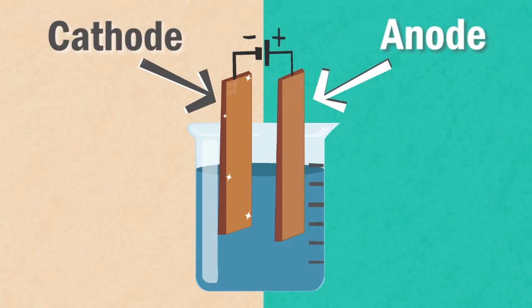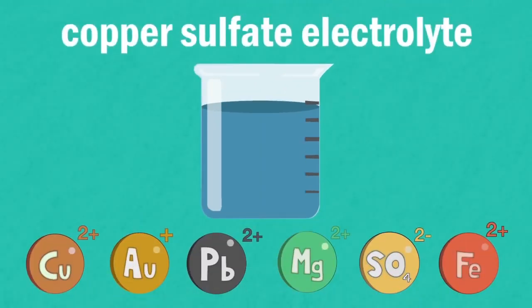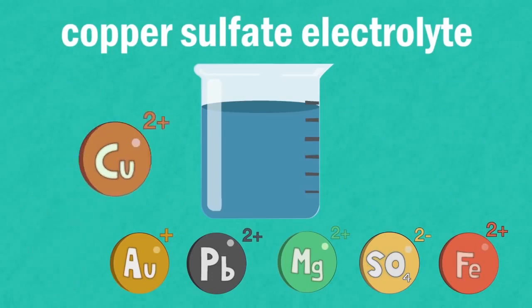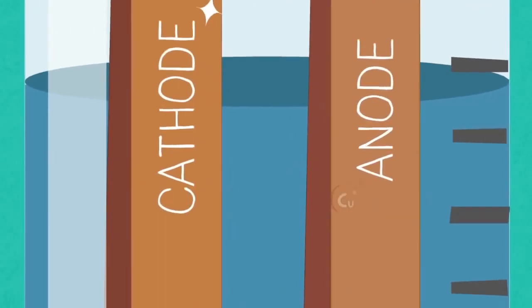What ions do you think are present in the copper sulfate electrolyte? The answer is that copper 2+ ions are present in the electrolyte along with sulfate ions, and it's the copper 2+ ions that will move between the anode and the cathode.